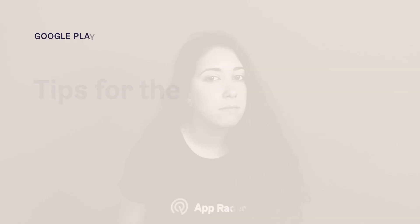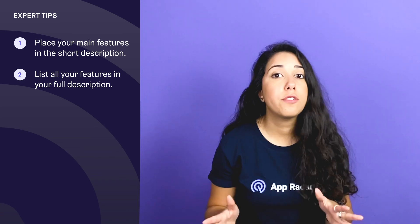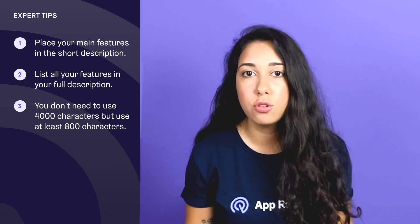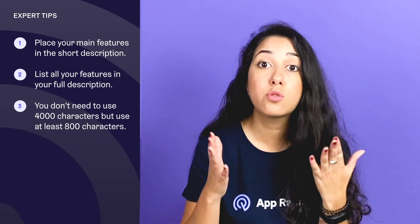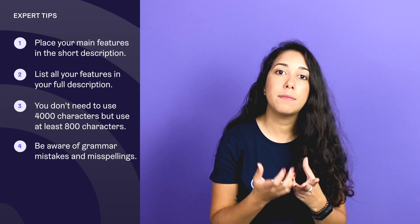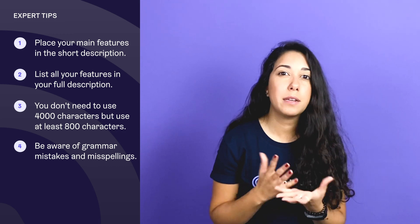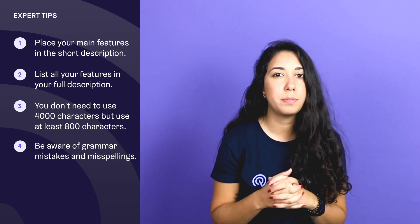Here are some quick tips for writing your app description. Keep your main features in the short description. List all your features in your full description so people understand everything your app offers. Only use 4,000 characters if you actually have something to say — you don't need a huge text if you don't. Be aware of grammar mistakes and misspellings. It's very important to have a well-written description, because when you don't, it might look sloppy or shady, and then the person might not trust you enough to download the app.